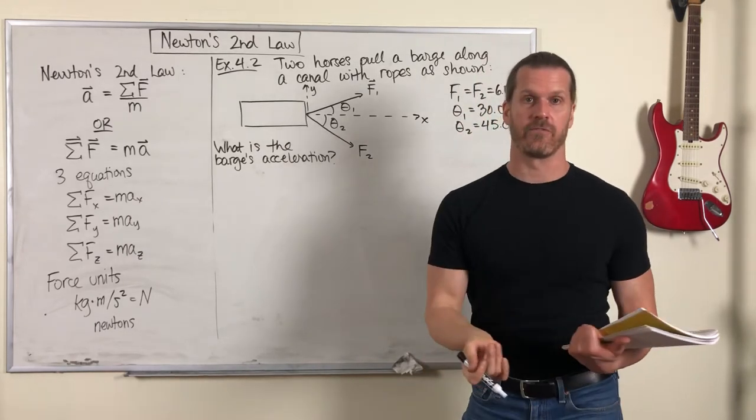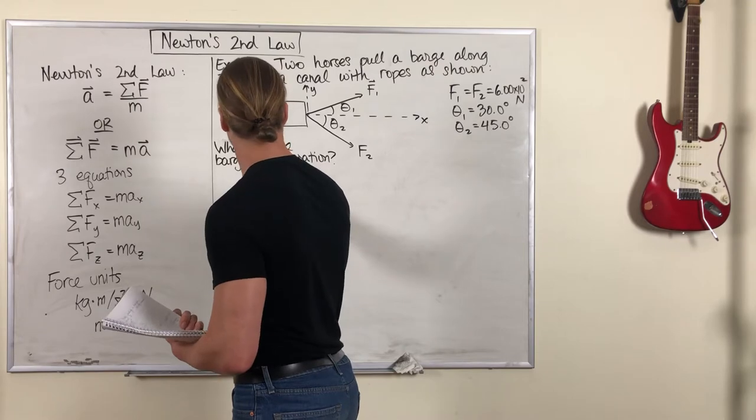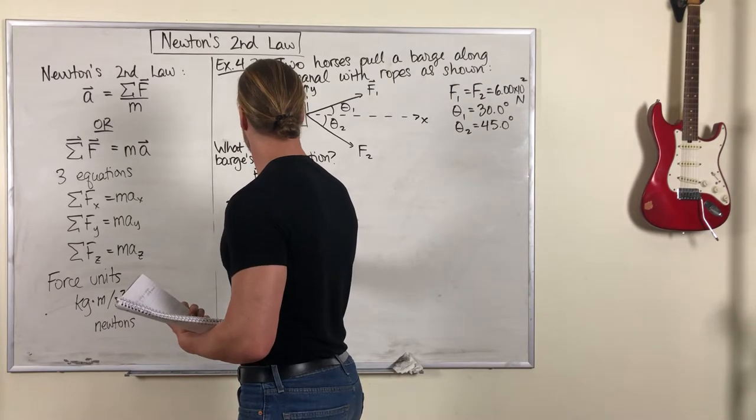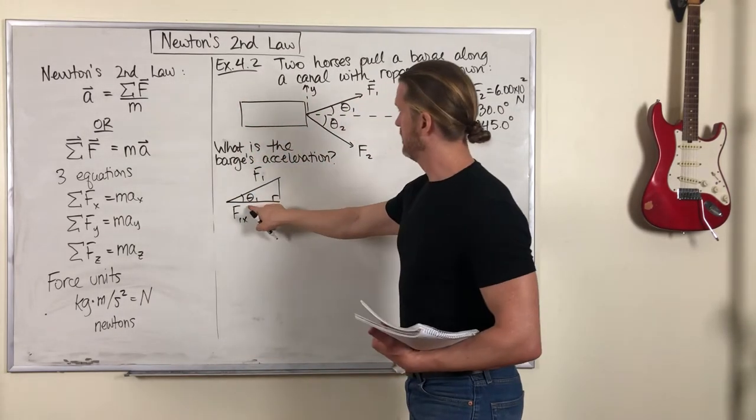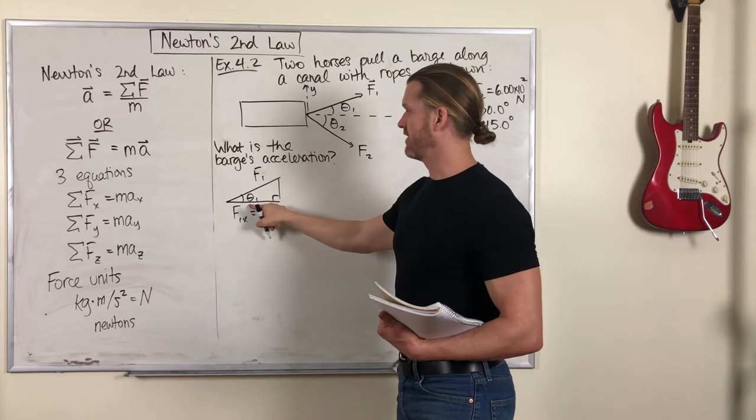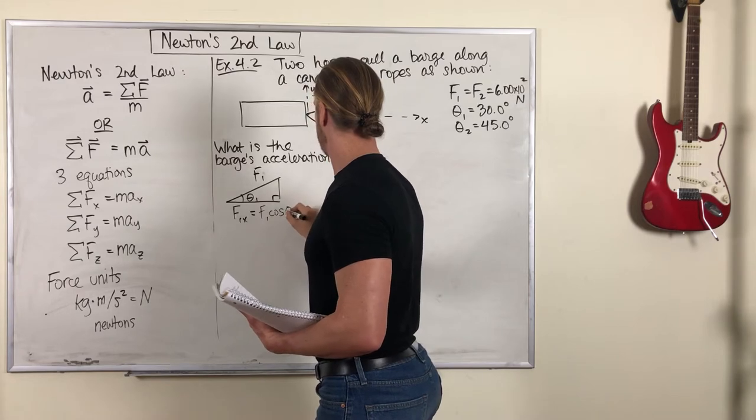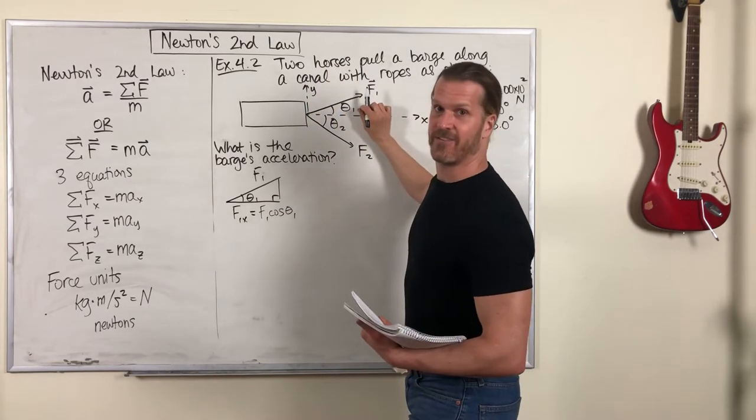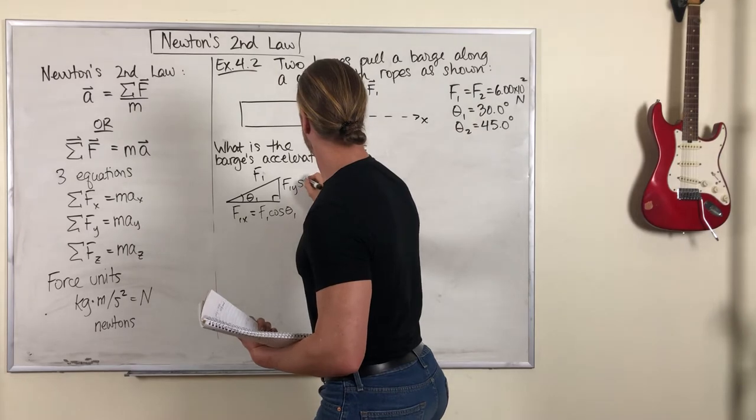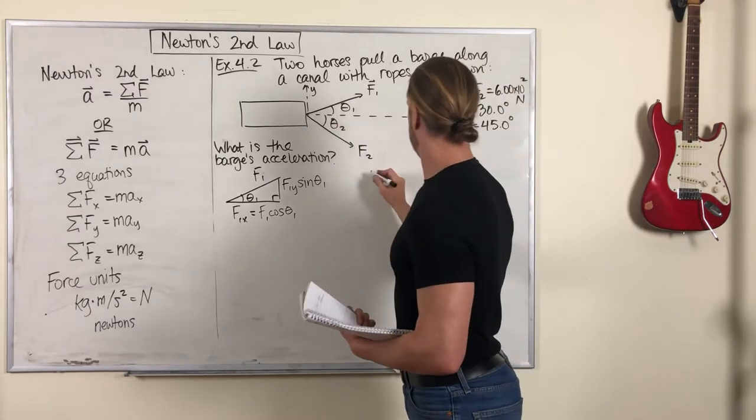That just involves some simple trigonometry. If you look at F1, F1x is the component going in that forward direction and it's the adjacent side of this right triangle, so it would be F1 cosine theta 1. And F1y is that perpendicular part, F1y gets the sine of that angle. And similarly for F2.